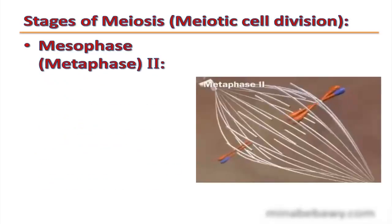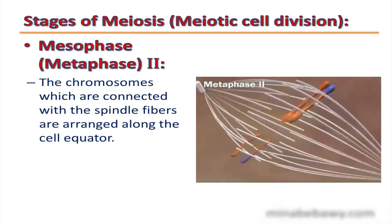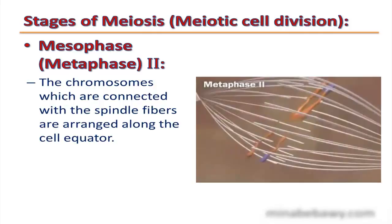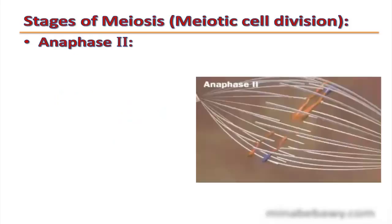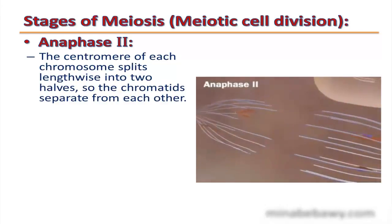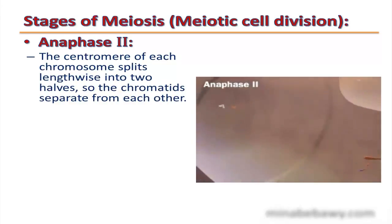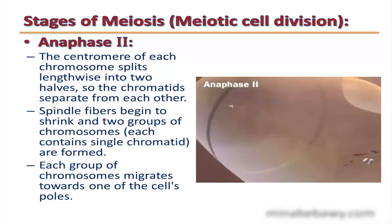The second phase is metaphase 2, in which the chromosomes connected with the spindle fibers are arranged along the cell equator. In anaphase 2, the centromere of each chromosome splits lengthwise into two halves, so the chromatids separate from each other. The spindle fibers begin to shrink and two groups of chromosomes, each containing a single chromatid, migrate toward opposite poles of the cell.